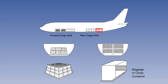Loose baggage or cargo can also be loaded in a specially reserved area after the rear cargo compartment. This type of load must be restrained by a net attached to the floor, walls and ceiling.